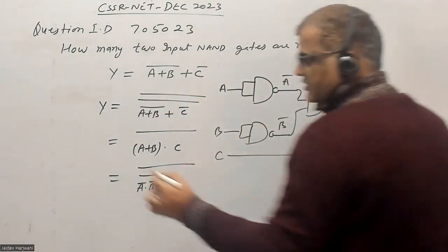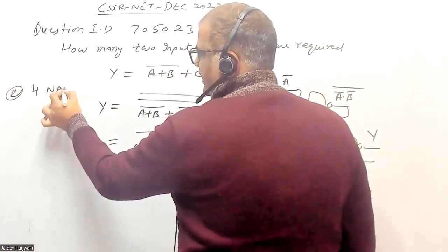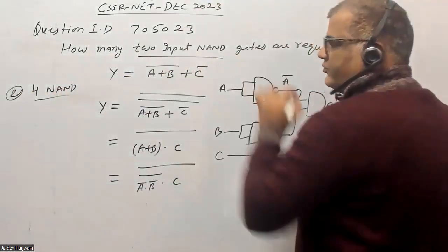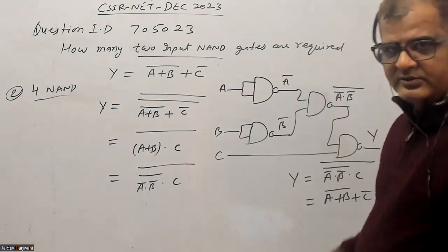So you require four NAND gates to implement this function which is given as option two. So option two is four NAND gates, two input NAND gates. So option two is the correct answer for this question. Thank you very much.